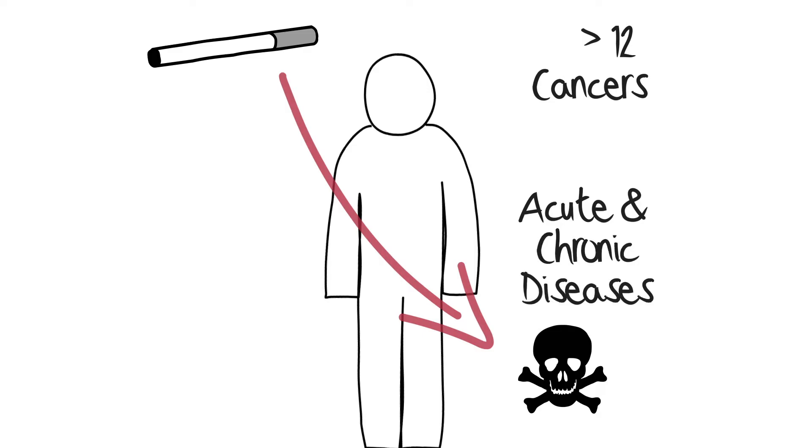Tobacco smoking harms almost all systems of the human body. Smoking causes cancer throughout most of the respiratory tract, including the oropharynx, larynx, trachea, bronchi, and lungs.